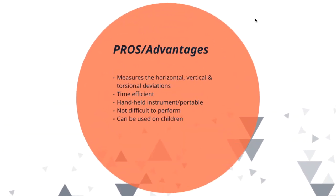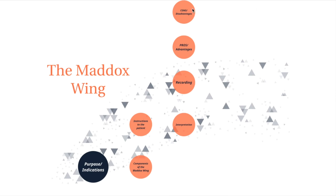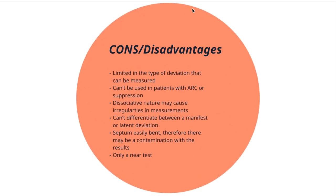Advantages of the Maddox wing include being able to measure the horizontal, vertical and torsional components of the deviation. It is a very time-efficient method of measuring strabismus. It is a hand-held instrument, not a difficult skill to learn, and can be used on children. Disadvantages include being limited in the type of deviation that can be measured. It cannot be used on patients with ARC or suppression. The dissociative nature of the test may cause irregularities in measurements. It cannot differentiate between a manifest or a latent deviation. And the septum is easily bent, leading to incorrect results as one eye may see both arrows and numbers.